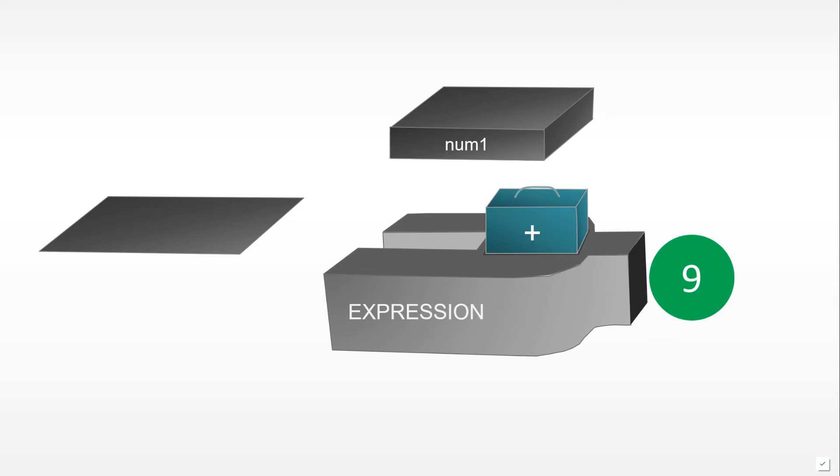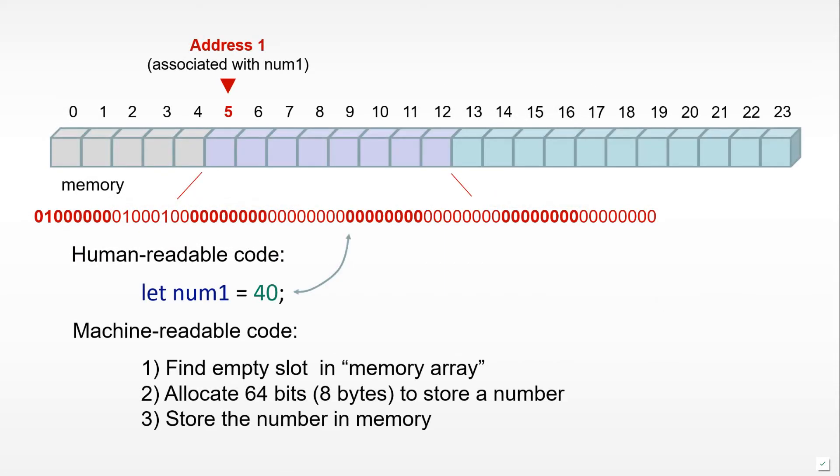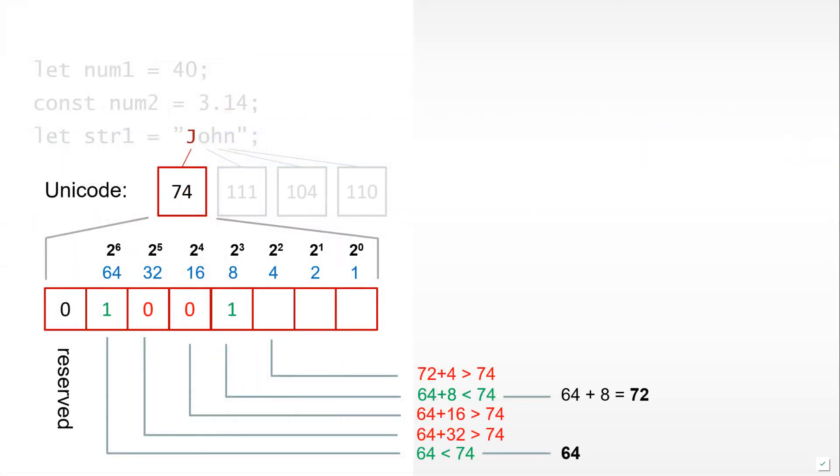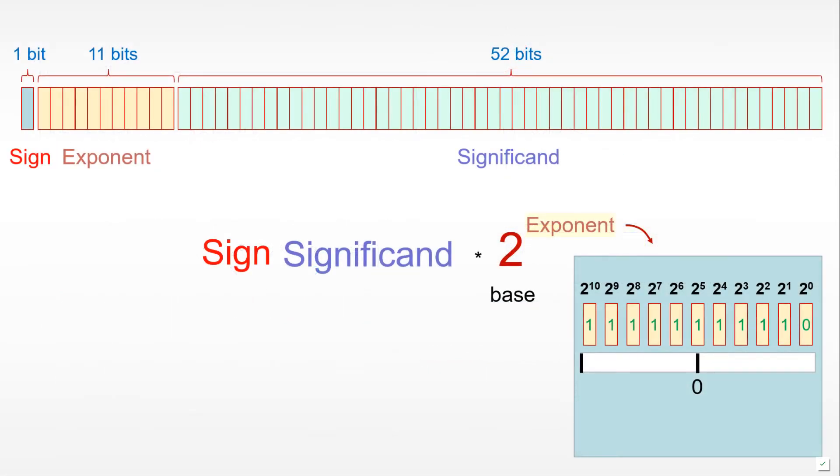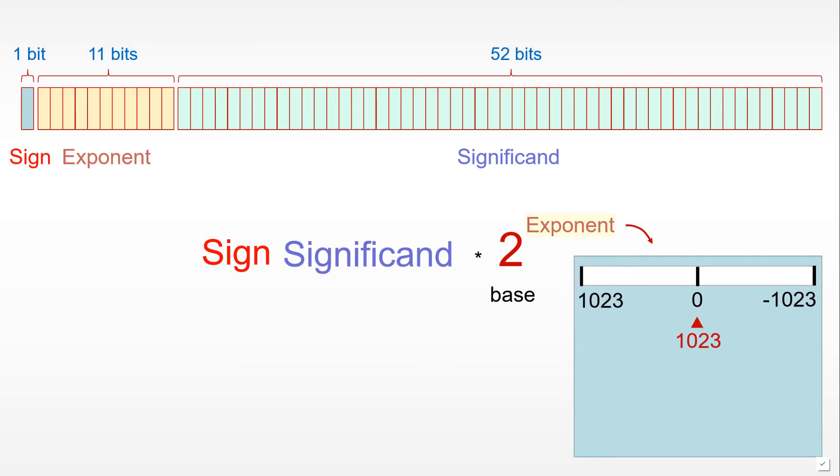But this won't stop us from discussing how memory allocation works when we declare a variable, or how we encode characters in binary to understand how the string value type works. We'll also fully explore how the number value type works in the background, which even many experienced JavaScript developers don't fully comprehend.